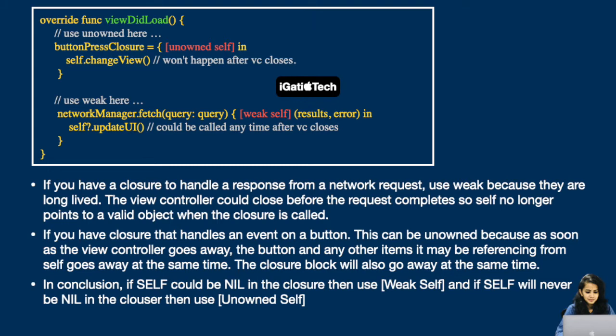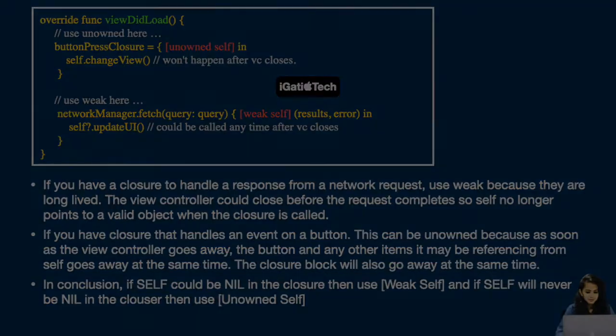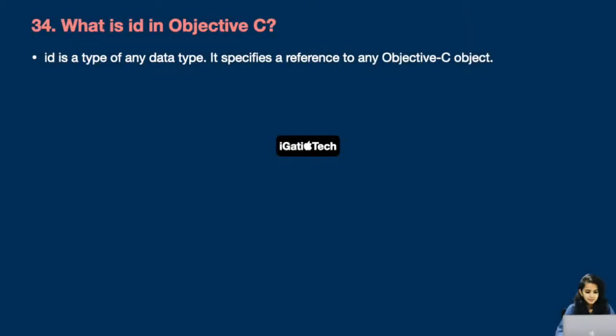If you have a closure to handle a response from a network request, use weak, because they are long-lived — the view controller could close before the request completes, so self may no longer point to a valid object. If you have a closure that handles a button event, use unowned, because as soon as the view controller goes away, the button and referenced items go away at the same time. In conclusion: if self could be nil in the closure, use weak self; if self will never be nil, use unowned self.